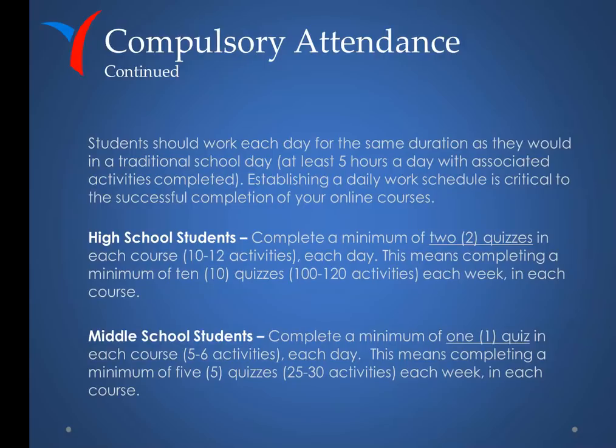For high school, completing a minimum of 2 quizzes per course per day means completing a minimum of 10 quizzes, or 100 to 120 activities, each week in each course. Middle school students should complete a minimum of 1 quiz in each course, or 5 to 6 activities, each day — meaning a minimum of 5 quizzes, or 25 to 30 activities, each week in each course.